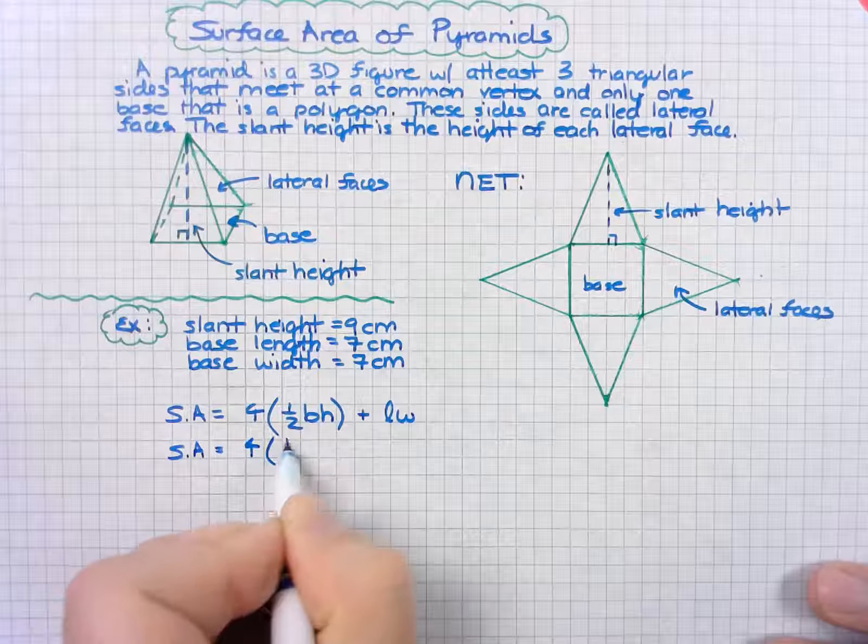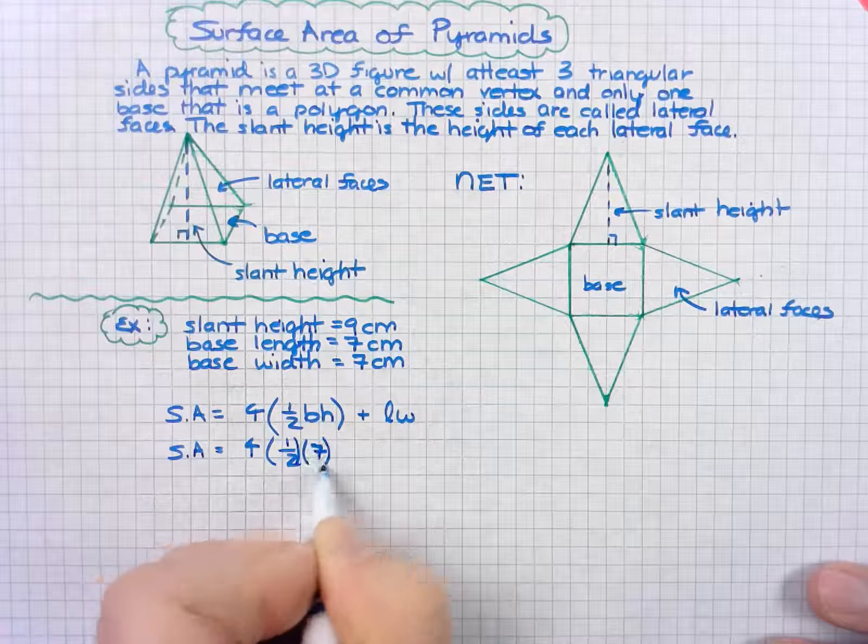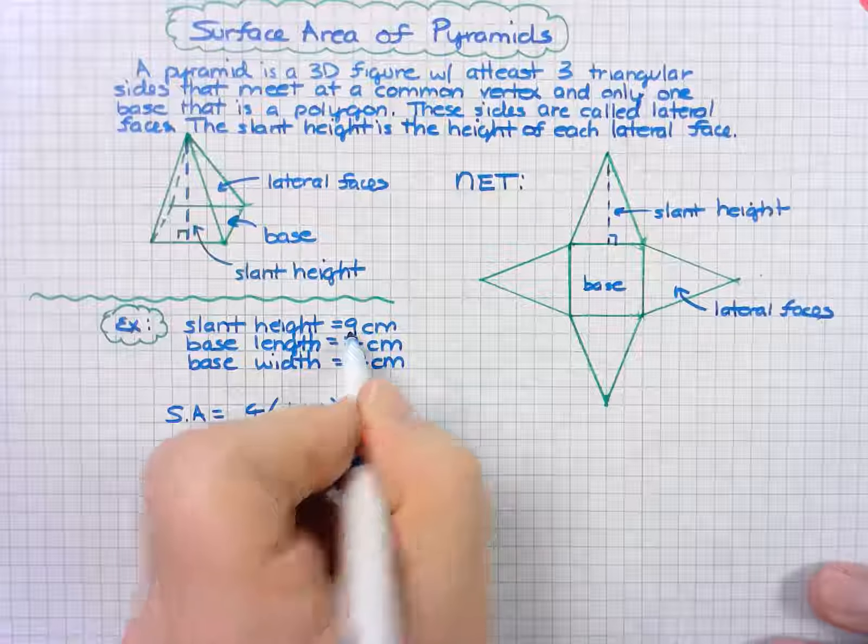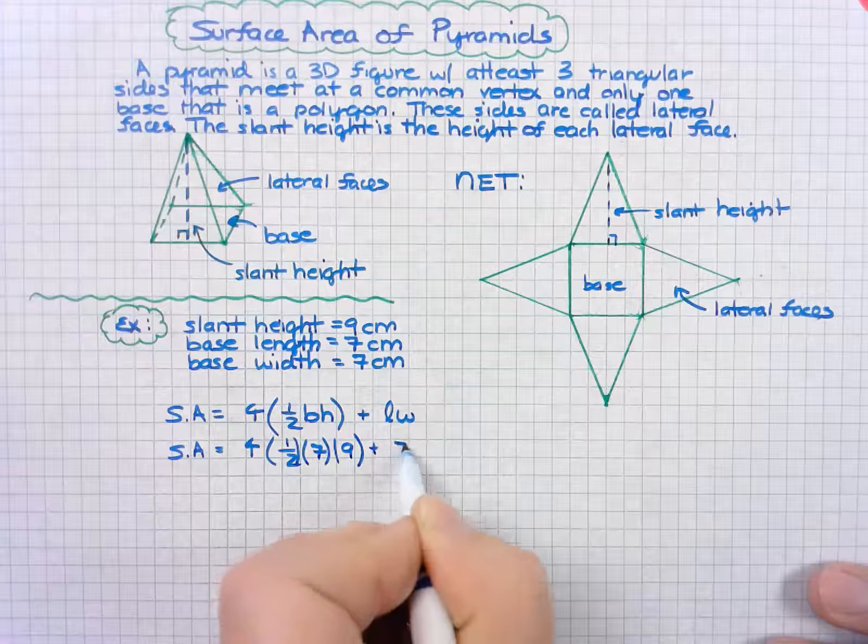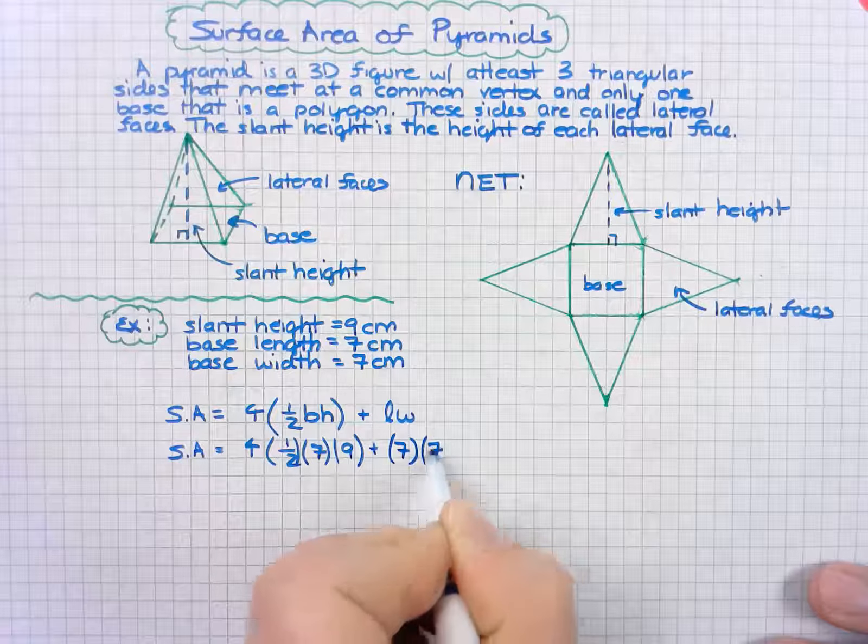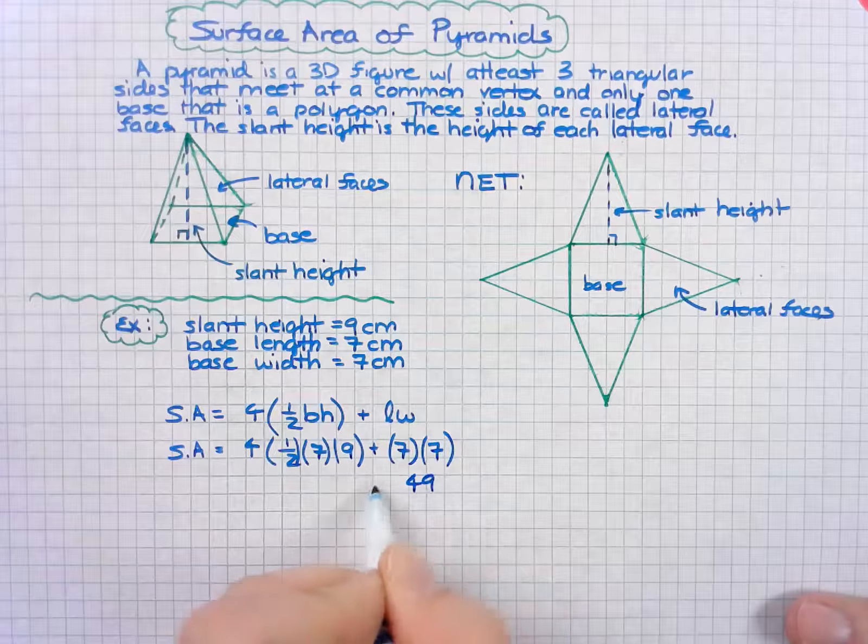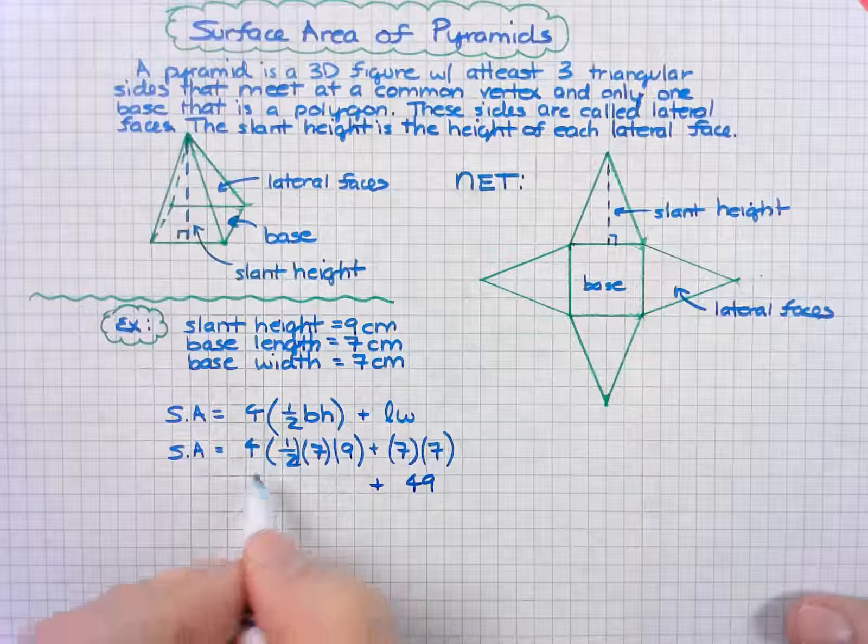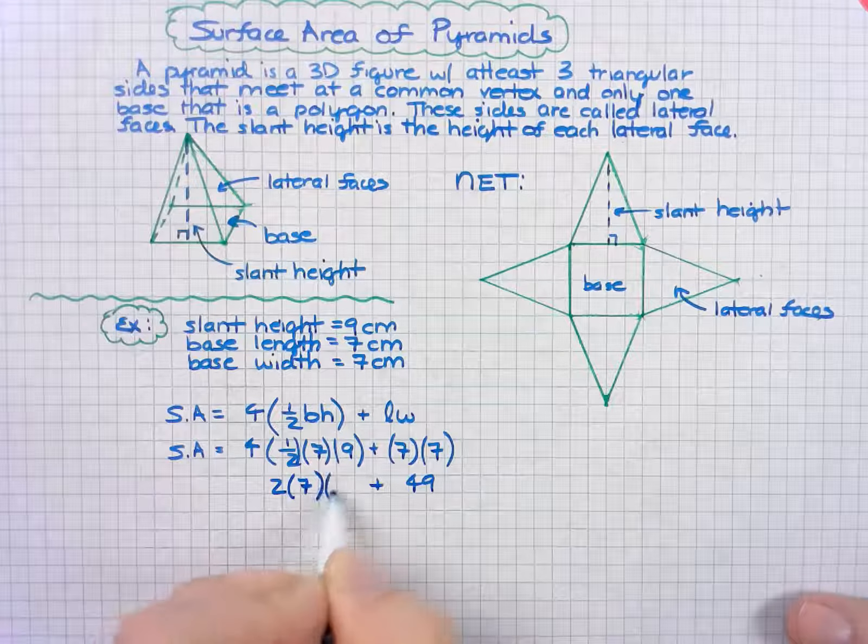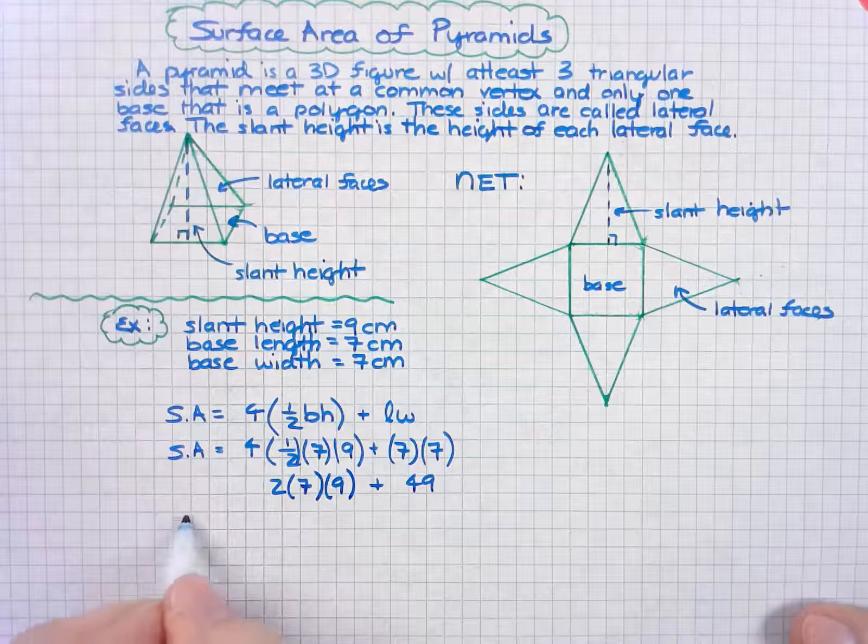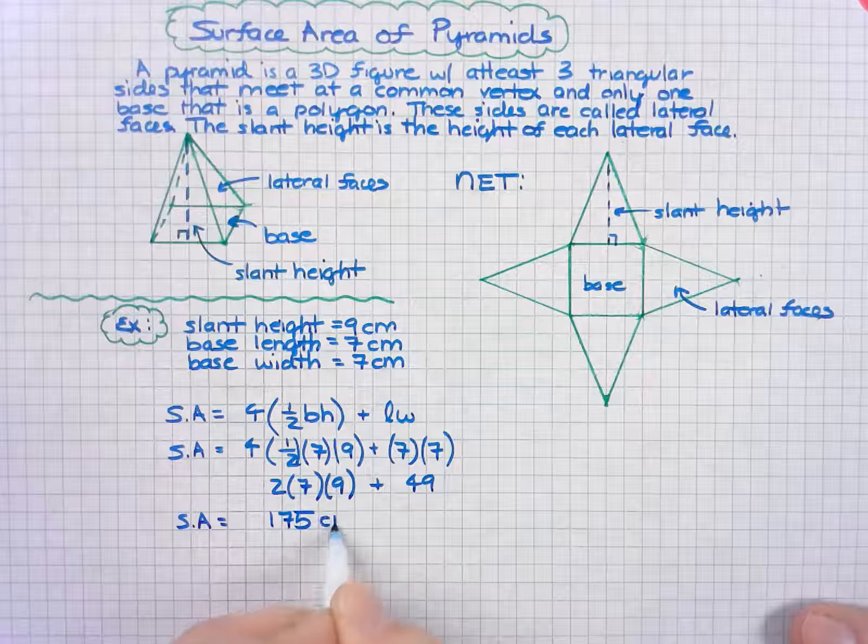We have four times one half. The base is seven and the height is nine. The area of the square is seven squared, or seven times seven. Simplifying all this, I have 49, plus four over two is two, times seven times nine. That gives me a surface area of 175 centimeters squared.